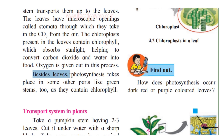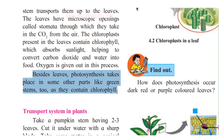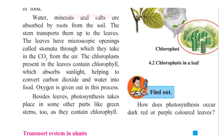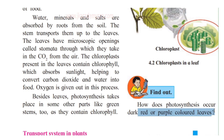Here is an activity: find out how photosynthesis occurs in dark red or purple colored leaves. We know that the green pigment, chlorophyll, helps plants produce their food — but what about plants with dark red or purple colored leaves? Find it out, and you can check your answers on our website at www.jkacademypro.com. You will get the link in the description box below.